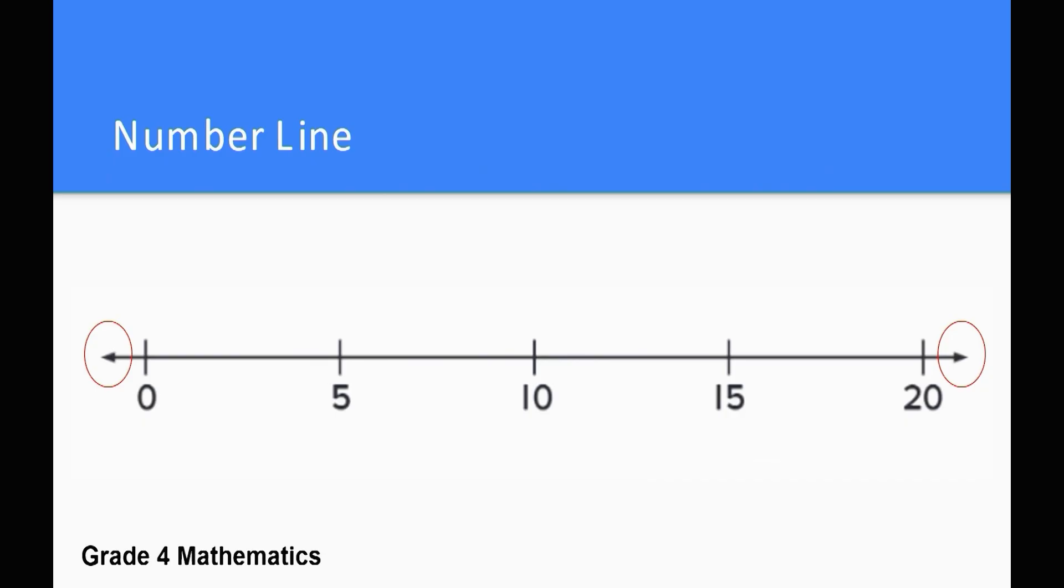When you draw a number line, what do you draw at the ends? What does this tell us? The arrows tell us that the line goes on and on in both directions. When you draw a number line, you are only drawing a part of it. A real line is too long to fit on your paper because it goes on and on forever.